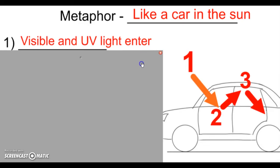Visible light and ultraviolet light enter the car. So that's coming from the sun. Visible light and UV light go right through the glass. Obviously they can go through the glass, that's what they do.